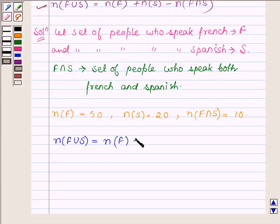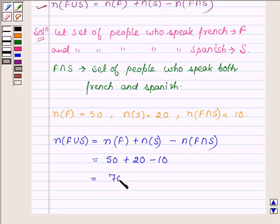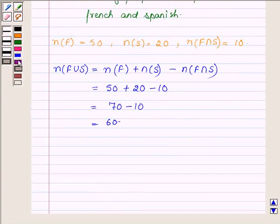Putting these values in the formula, which is our key idea, the number of people who speak French or Spanish is equal to the number of people who speak French plus the number of people who speak Spanish minus the number of people who speak both. This equals 50 plus 20 minus 10, which equals 70 minus 10, which equals 60.